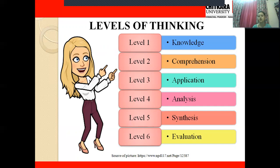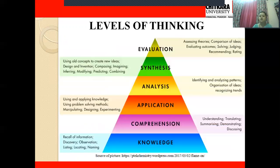At the knowledge level, you recall information from past experiences — discovering, observing, locating, naming something. Next is comprehension, which is a deeper knowledge — when you are understanding the facts and abstract ideas regarding a particular topic, like translating, summarizing, demonstrating, or discussing something. Having knowledge about a topic and then summarizing or discussing it means you are comprehending — trying to have a deep knowledge regarding that topic.